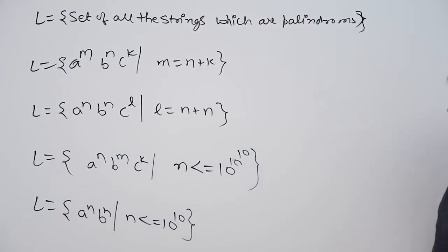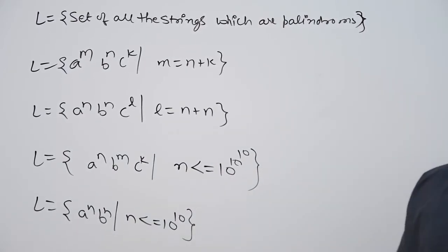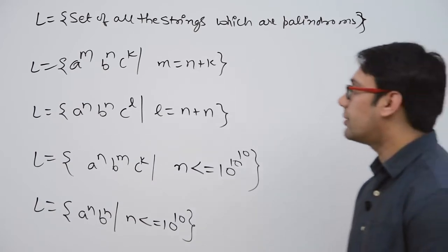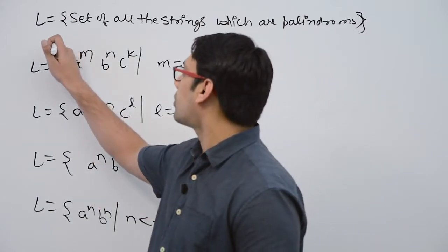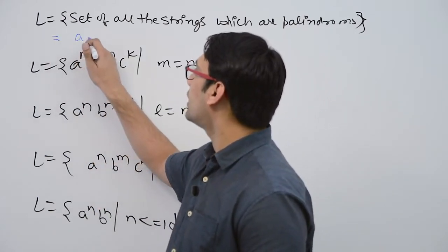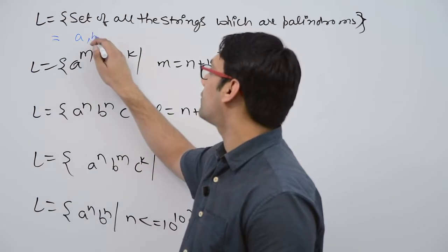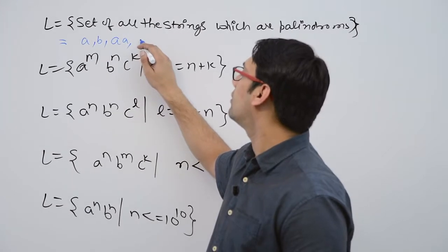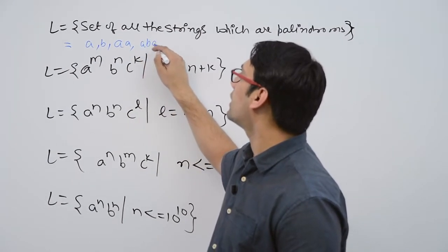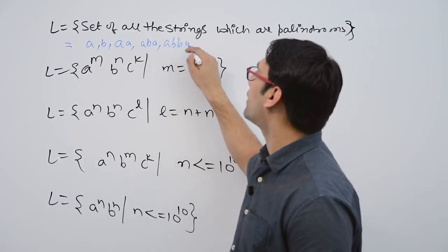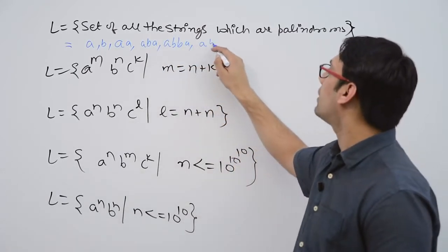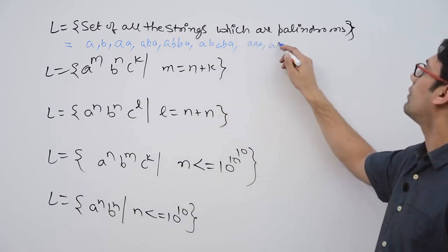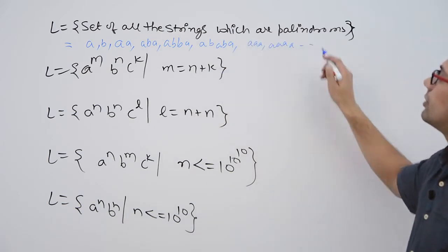Let us say the first language is the set of all strings which are palindromes. So what are palindrome strings? A string of length 0 is a palindrome. Single 'a' is a palindrome, single 'b' is a palindrome, 'aa' is a palindrome, 'aba' is a palindrome, 'abba' is a palindrome, 'ababa' is a palindrome, 'aaa' is a palindrome, 'aaaa' is a palindrome, and so on.